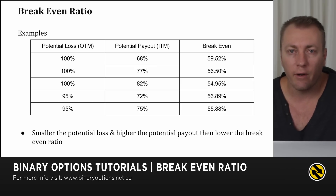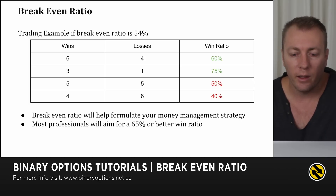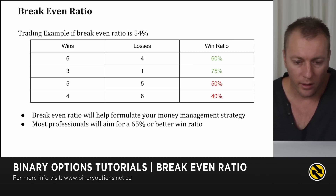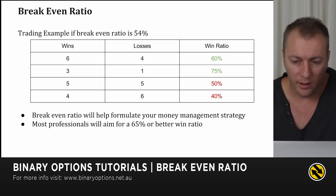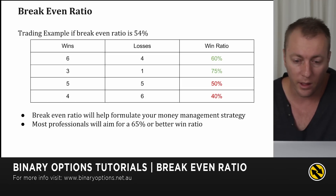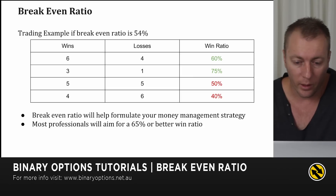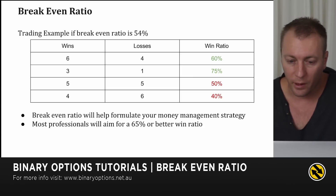A lower break-even ratio gives you more of a buffer — you can lose more trades and still run at a profit. For example, if a break-even ratio is calculated to be 54% with a particular broker, winning 60% of the time (six wins and four losses) means you're running at a profit. If you win three times and lose once, that's a 75% win ratio, so you're profiting. If your win ratio drops below 54%, you're actually losing over the long haul.